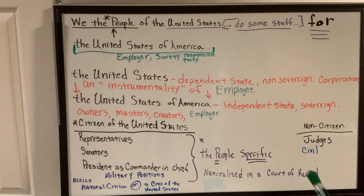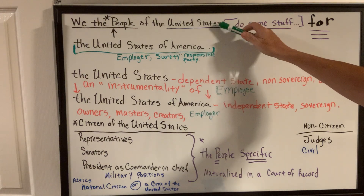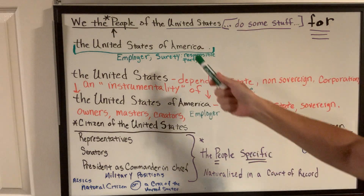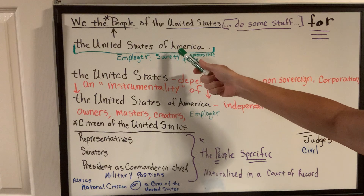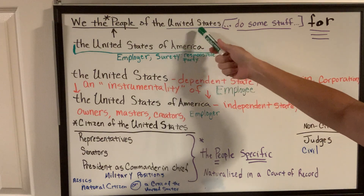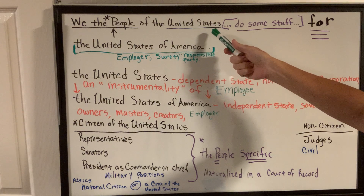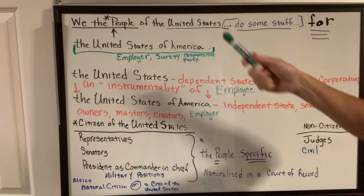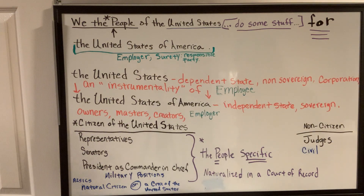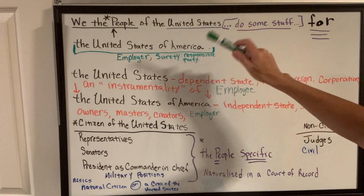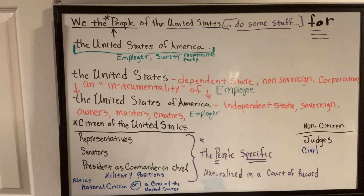Good morning. Today I want to talk about the two places — the United States and the United States of America — how you go from being a citizen of one of the states to a citizen in the federal government, called a federal citizen, also called an officer or employee, and what these two places are.